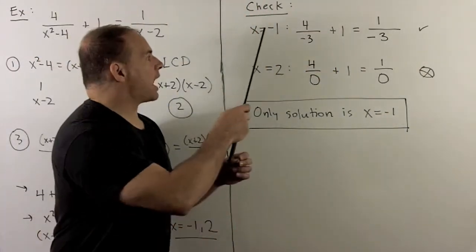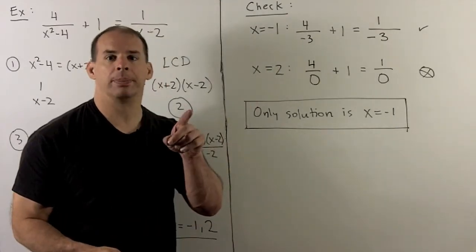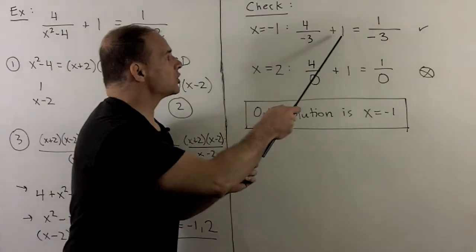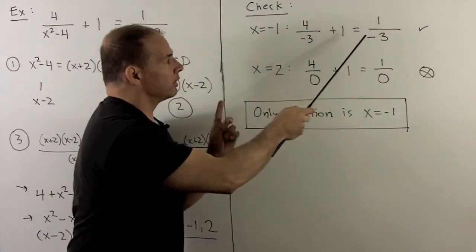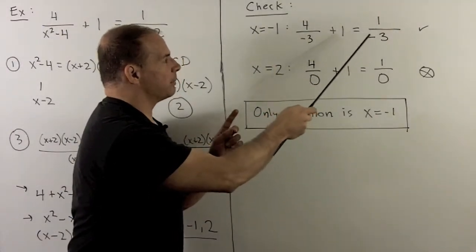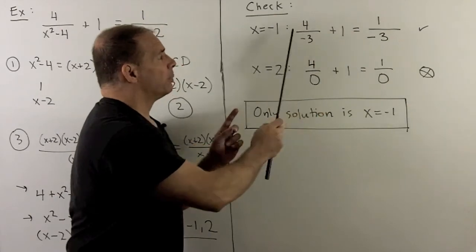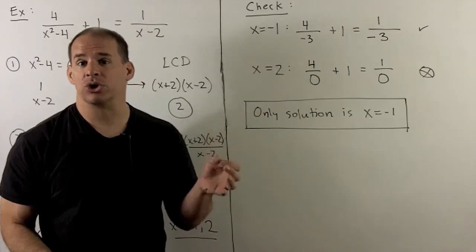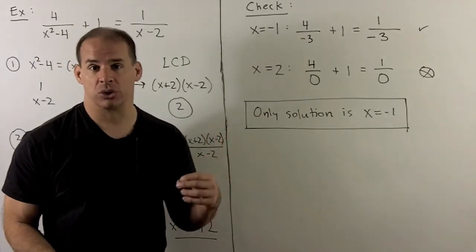For x equal to minus 1, I have 4 over x squared minus 4. x squared minus 4 is going to be minus 3. We have plus 1. Then I have 1 over x minus 2, so that becomes minus 3. On both sides, I have 1 over minus 3, minus a third. So that solution checks out. That's a genuine solution.